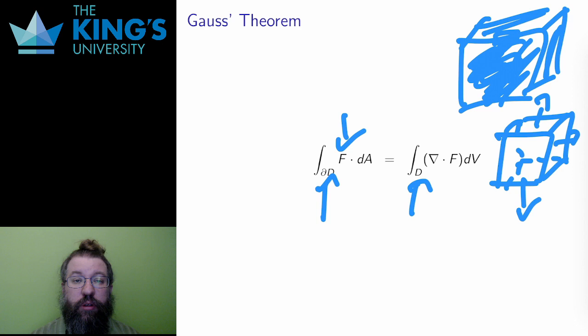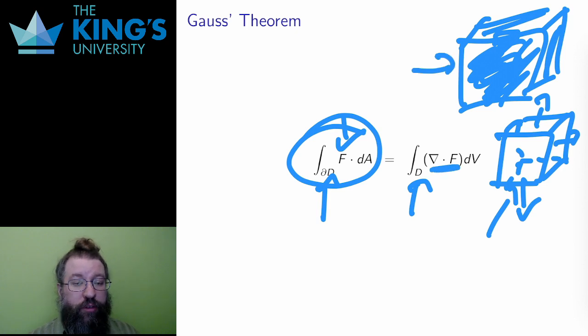Then the theorem says that the integral of f over this boundary surface is the same as the integral of the divergence of f over the whole solid region. It's the same pattern as before, a boundary on the left and a derivative on the right. In this case, the boundary is the boundary of a solid region, and the derivative is the divergence of a vector field.